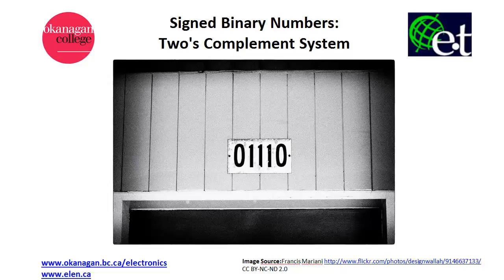In this video, I'm going to talk about using the 2's complement system to represent signed binary numbers. Keep in mind, when I use the term 2's complement, there are actually two meanings. The first is the 2's complement system, which is a system for representing signed binary numbers. The second meaning is simply a mathematical operation on binary numbers, essentially like multiplying by negative 1. Hopefully things will become clearer as you watch the rest of the video.